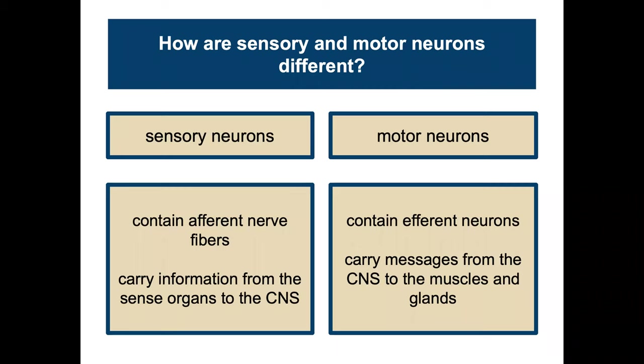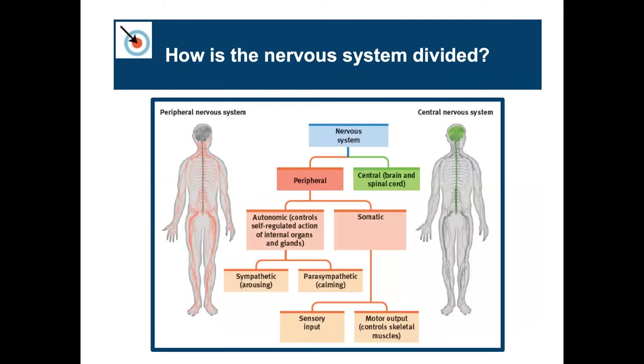Looking at the differences: sensory neurons contain afferent nerve fibers and carry information from the sense organs to the central nervous system, whereas motor neurons contain efferent fibers and carry messages from the central nervous system to the muscles and glands. This is a simplified overview of how the nervous system is divided.